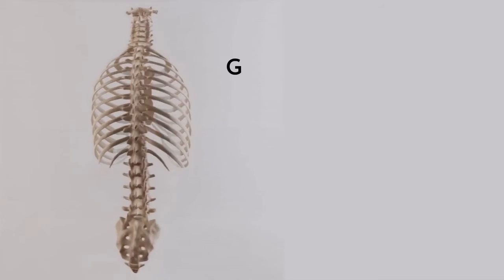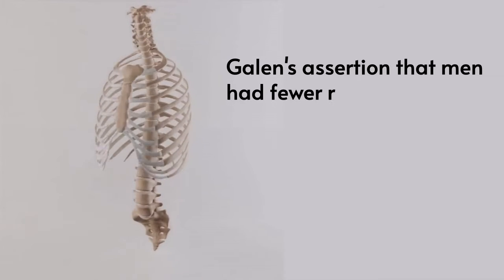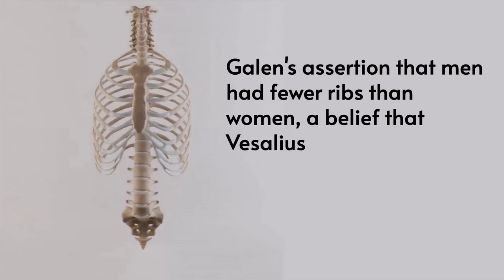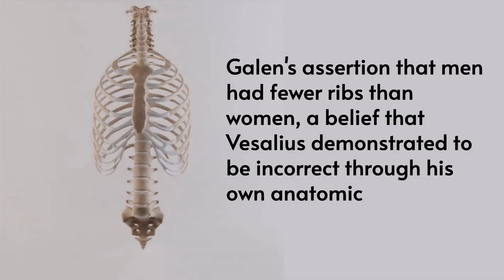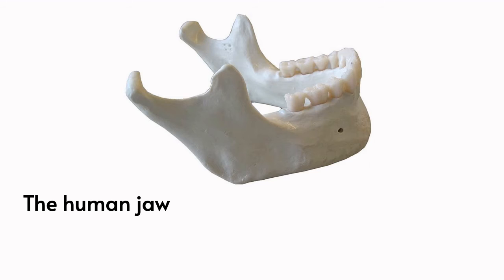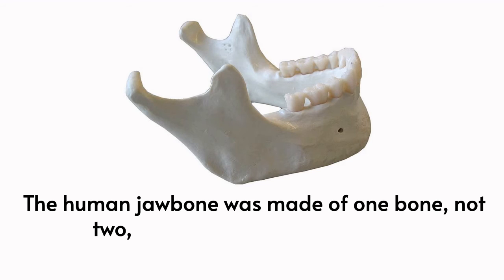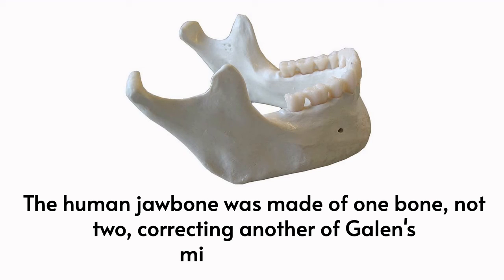One notable example was Galen's assertion that men had fewer ribs than women, a belief that Vesalius demonstrated to be incorrect through his own anatomical observations. Vesalius also proved that the human jawbone was made of one bone, not two, correcting another of Galen's misconceptions.